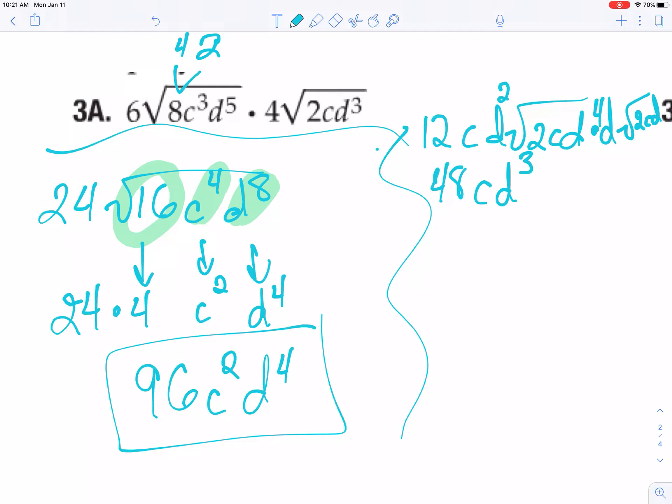Then underneath the radical sign, you have a 4c squared d squared that you then now have to simplify again to pull out a 2. Now you have, that was supposed to be a c.